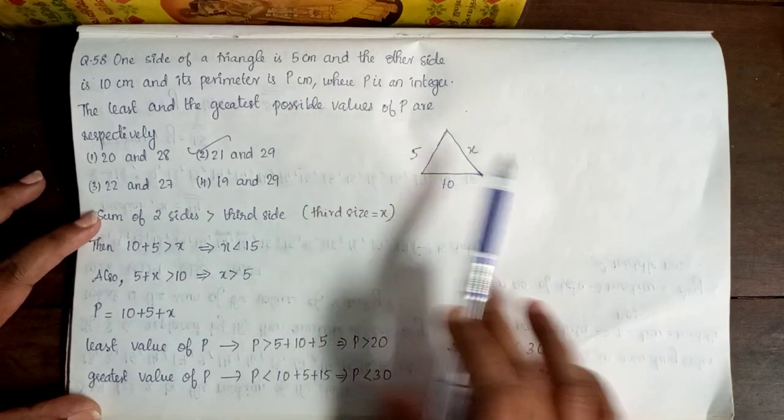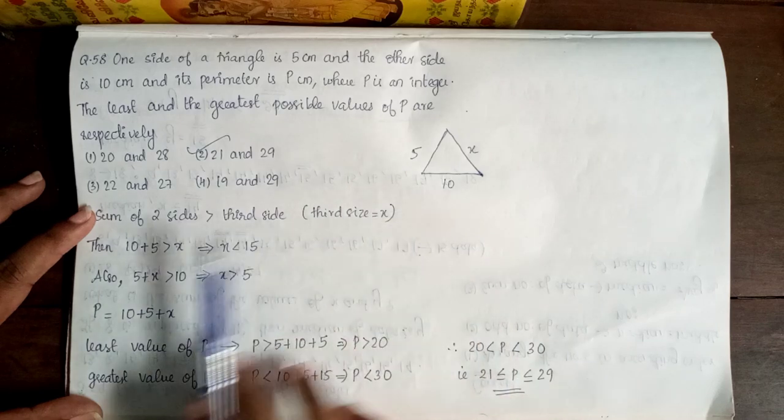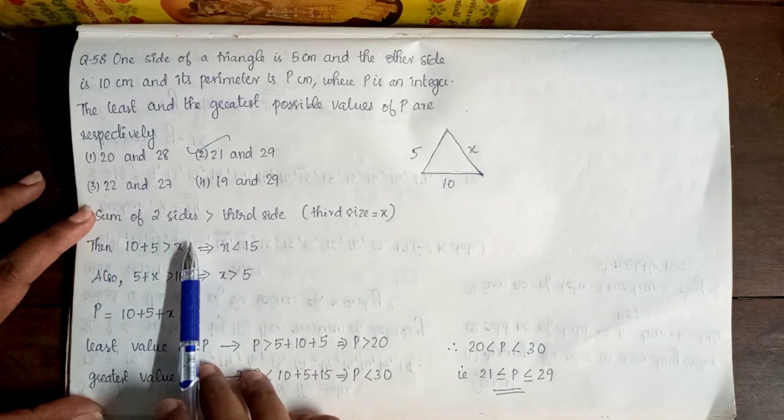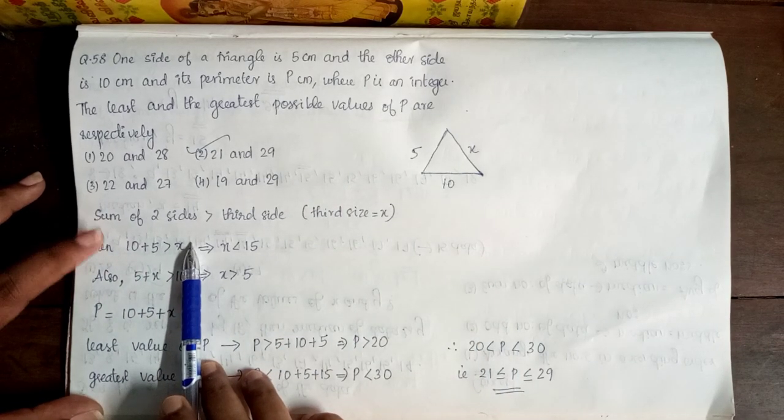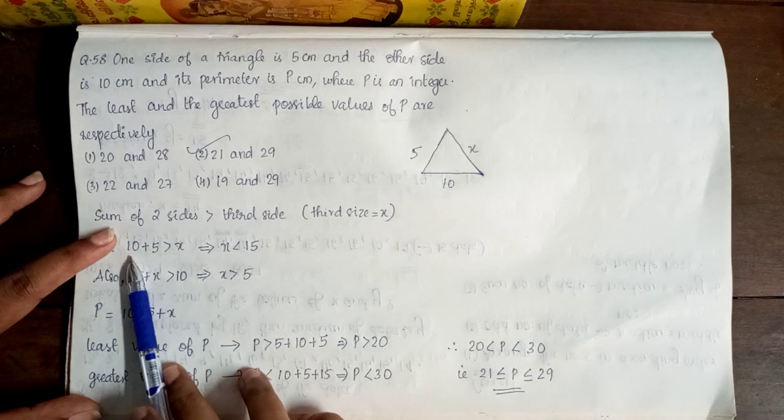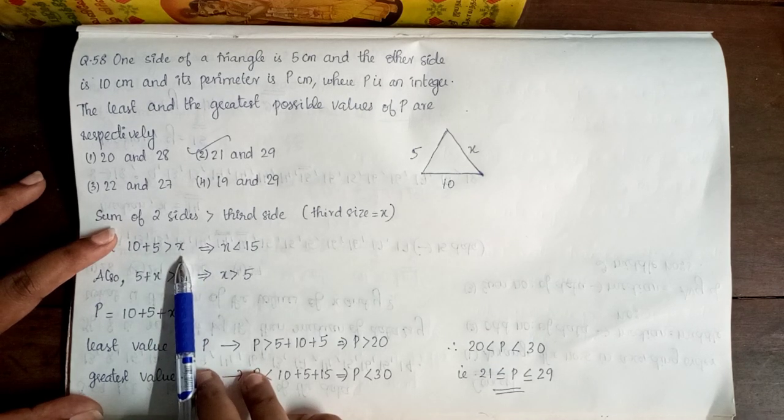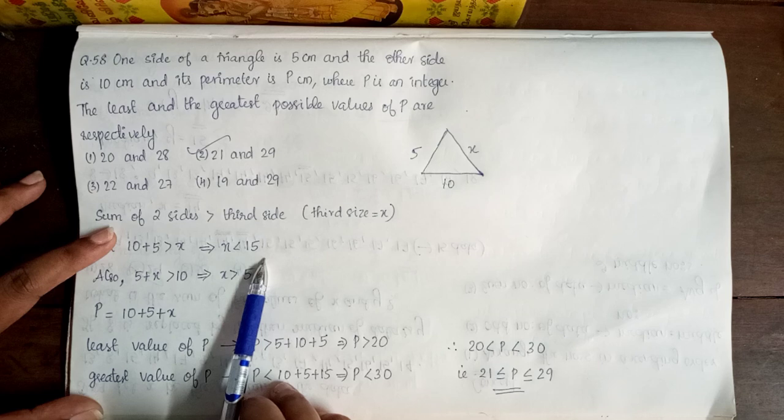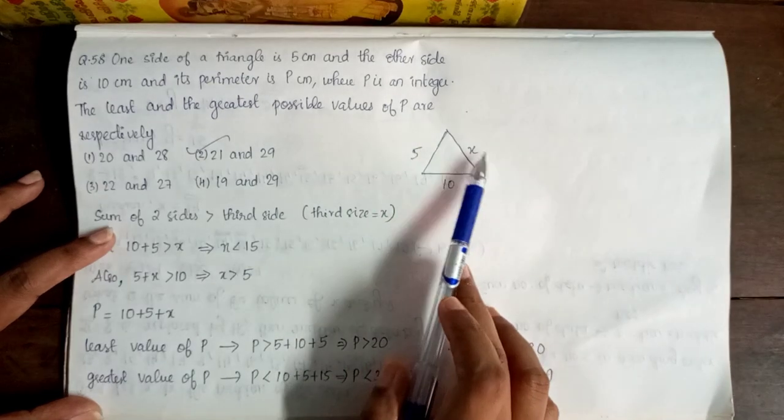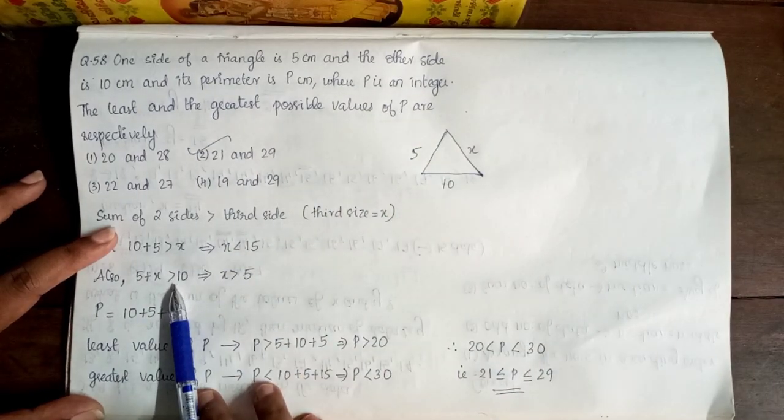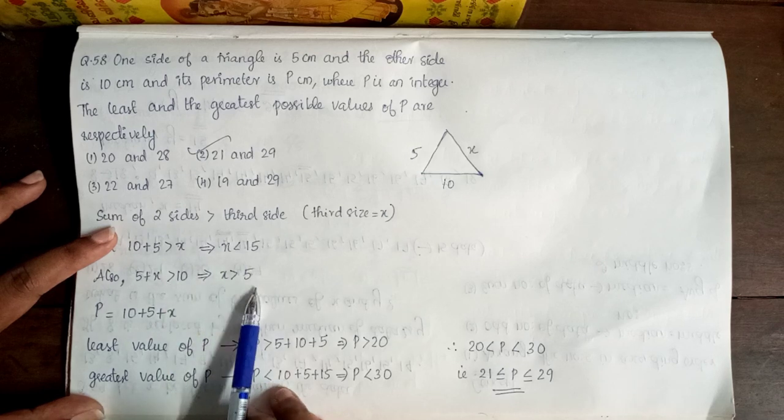Now I have the next side of the triangle and the sum of two sides is greater than the third side. I have the next side of the triangle. Now I have x less than 15. I have 5 plus x is greater than 10. So, I have x is greater than 5.